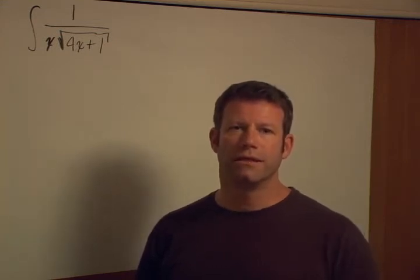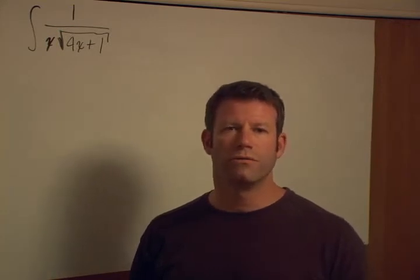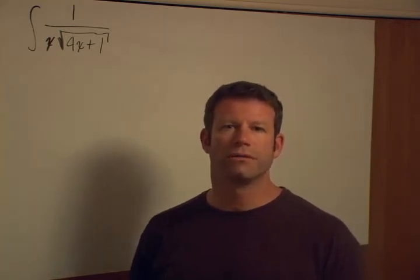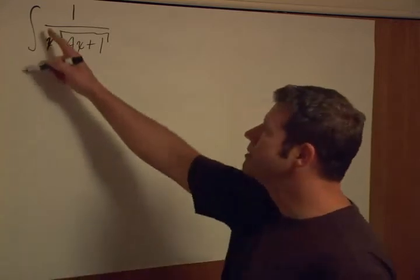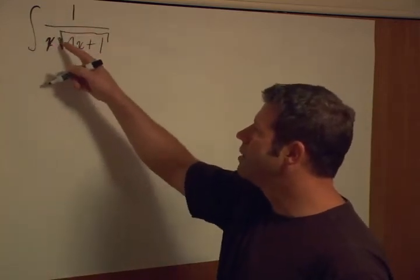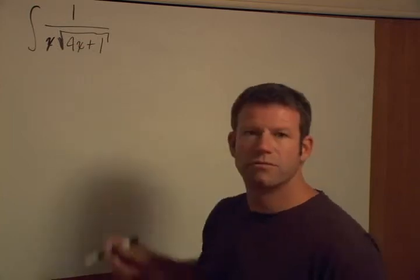So we're going to go through it from A to Z and I'll try to show you what would cause you to want to try certain things or not try certain things. The problem is the integral: one over x times the square root of the quantity 4x plus 1.